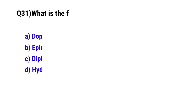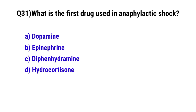Question number 31: What is the first drug used in anaphylactic shock? The correct option is B: epinephrine.